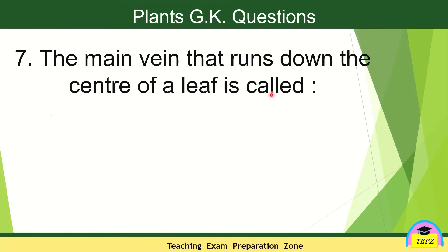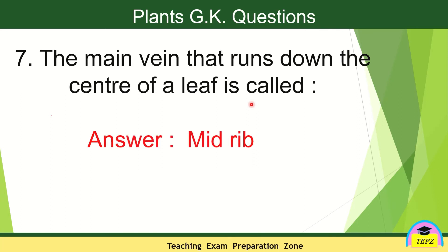The main vein that runs down the center of a leaf is called the midrib. A leaf has different parts like veins, leaf blade, and many other parts — maybe we will discuss those in another video. The main vein which runs through the center of a leaf is called the midrib.